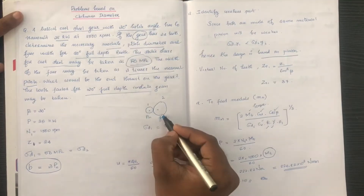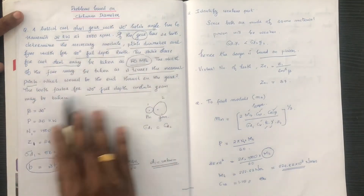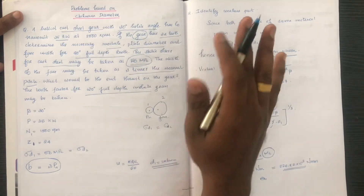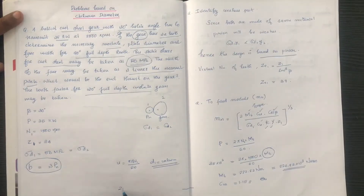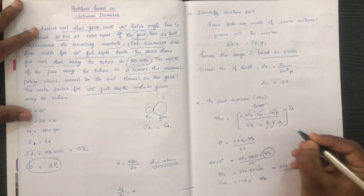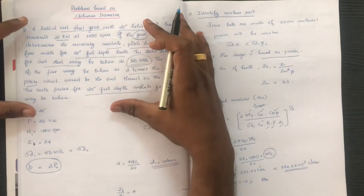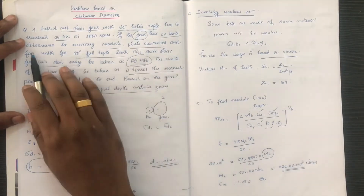Note that the pinion and gear are not separate concepts here — we assume the velocity ratio and substitute those values into the design equation. If the gear has 24 teeth, we proceed to determine the necessary module.